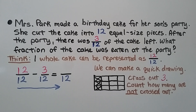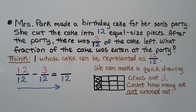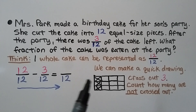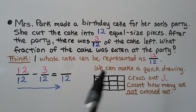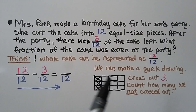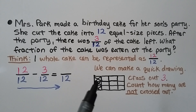Mrs. Park made a birthday cake for her son's party. She cut the cake into 12 equal-size pieces. After the party, there was 3 twelfths of the cake left. What fraction of the cake was eaten at the party? We think: one whole cake can be represented as 12 twelfths, since she cut it into 12 equal-size pieces.